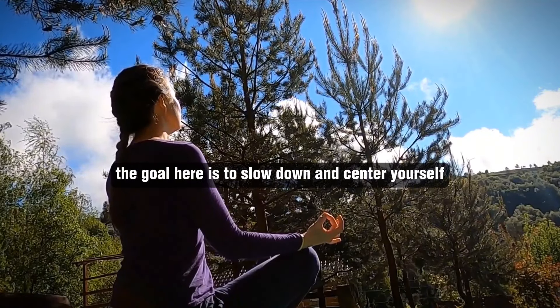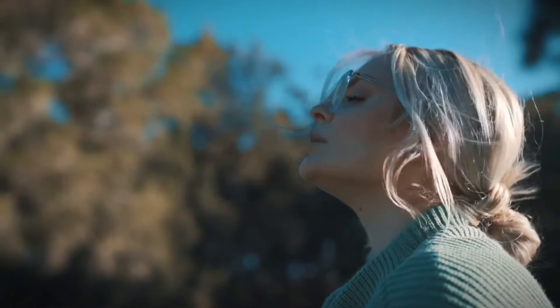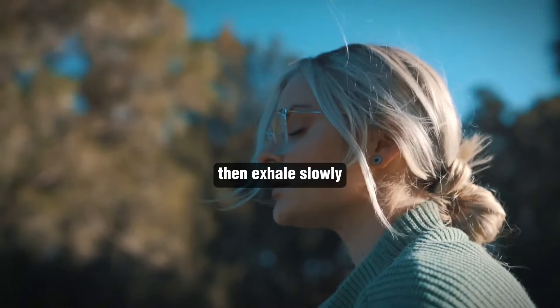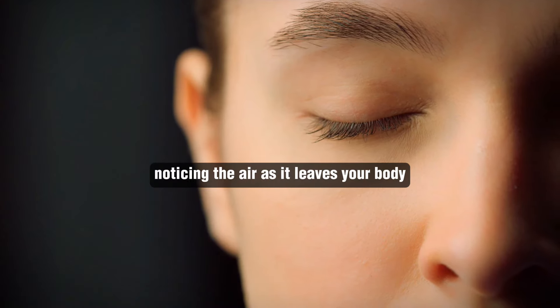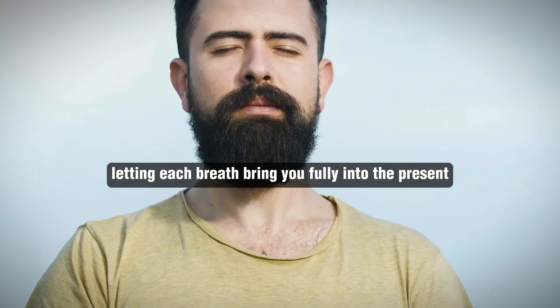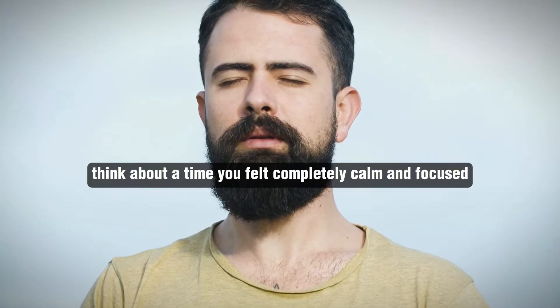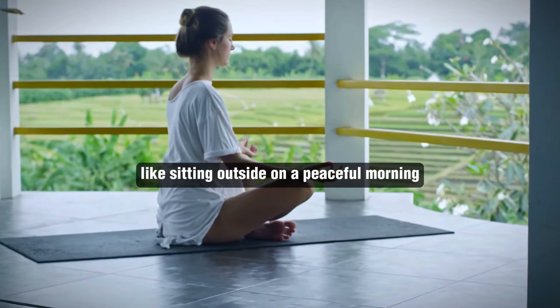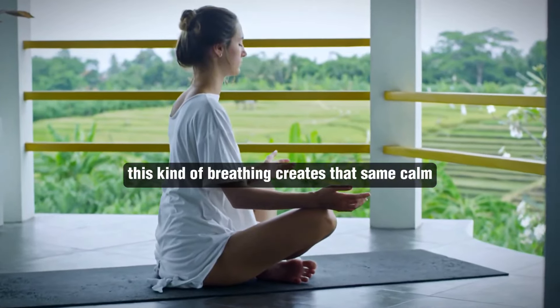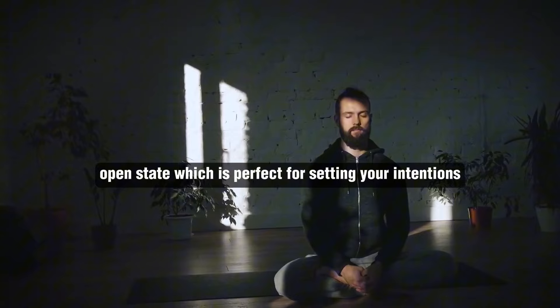Step 1 is a 5-minute breathing meditation. The goal here is to slow down and center yourself. Close your eyes, take a deep breath in, and feel the air filling your lungs. Then exhale slowly, noticing the air as it leaves your body. Repeat this for a few minutes, letting each breath bring you fully into the present. Think about a time you felt completely calm and focused, like sitting outside on a peaceful morning, just taking in the quiet. This kind of breathing creates that same calm, open state, which is perfect for setting your intentions.